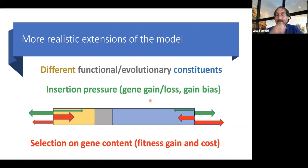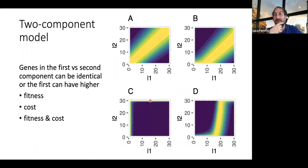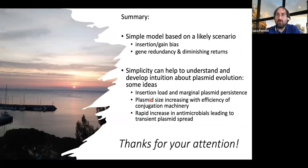This model is oversimplified. There are several more realistic extensions — one obvious one is to include gene loss, at least some components of it, and different constituents of the genome with different functions. We have done some of that; for example, there is a two-component model with two different sets of genes that can have different fitness and fitness costs. More generally, these models are of course oversimplified, but they offer some glimpse of interesting phenomena that may happen in actual plasmids and may help explaining them.